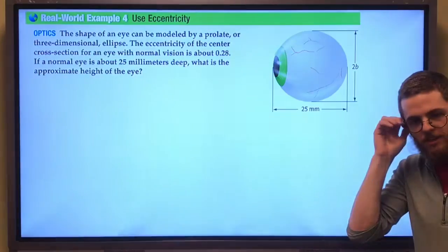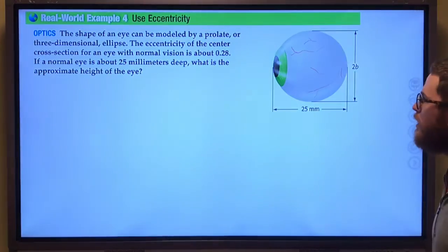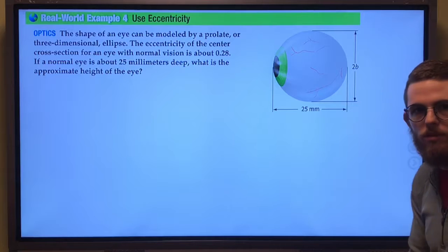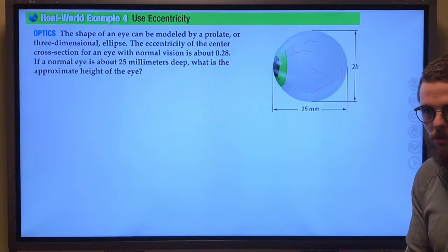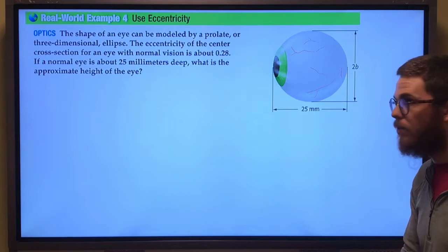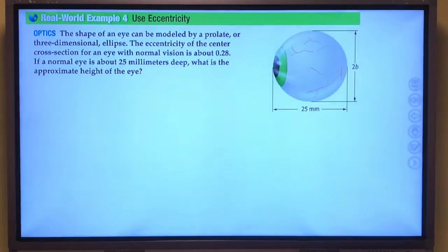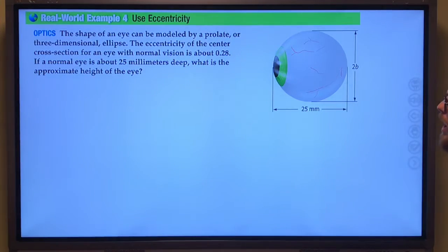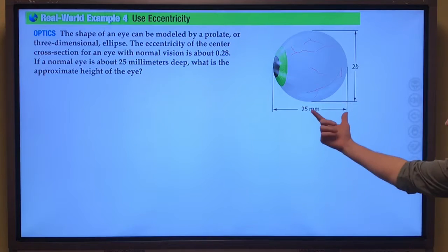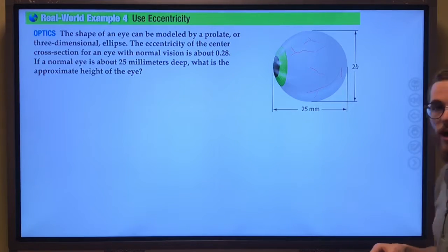Moving on, we can use the eccentricity to actually help us with some relatively helpful things. Here we have an eyeball. It says the shape of an eye can be modeled by a three-dimensional ellipse. The eccentricity of the center cross-section for an eye with normal vision is about 0.28. If a normal eye is about 25 millimeters deep, what is the approximate height of the eye?